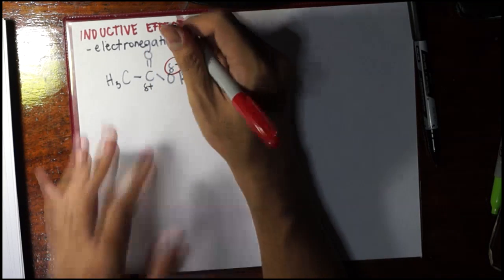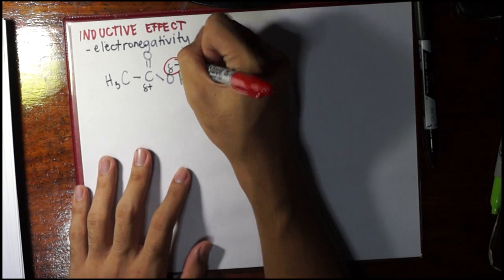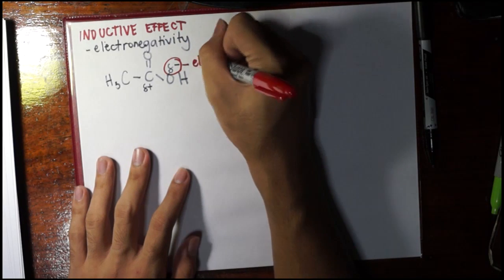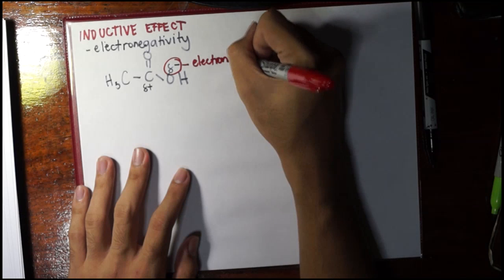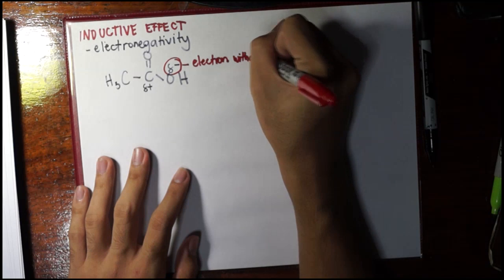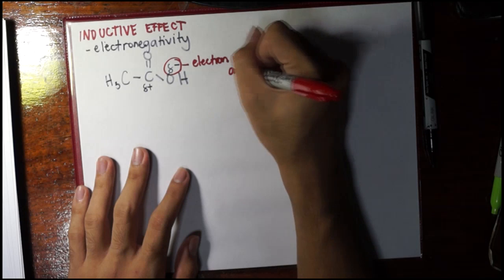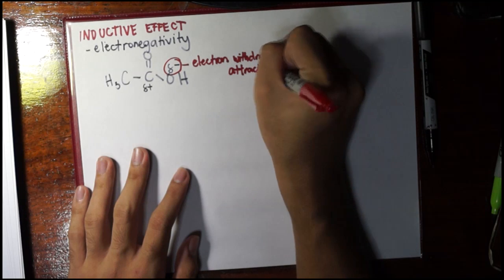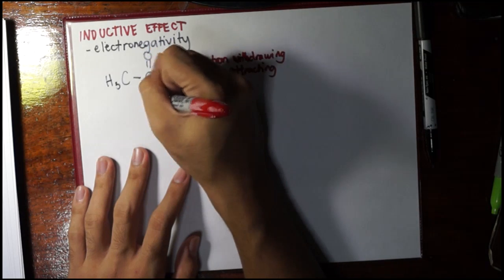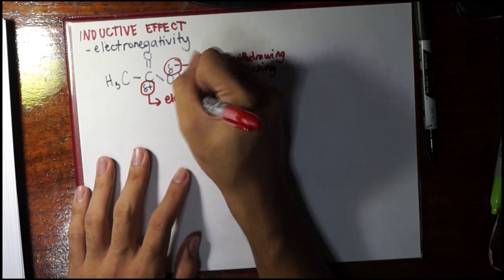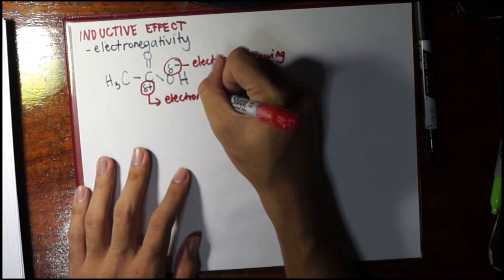Between two bonds having partial charges, the one which pulls electrons towards it is what we call electron withdrawing or electron attracting. The other one we call electron repelling.